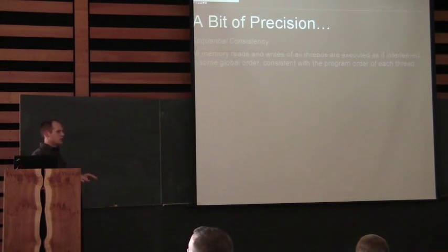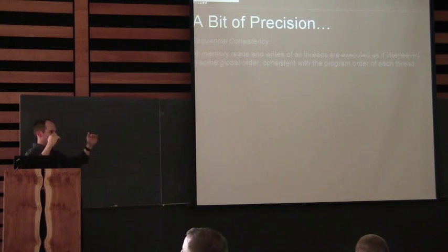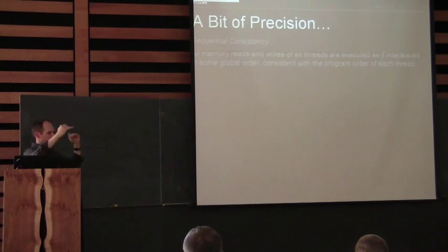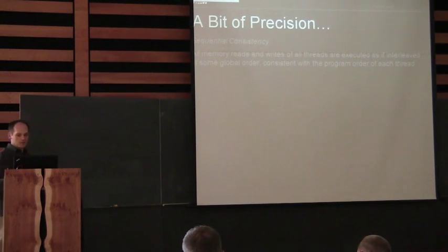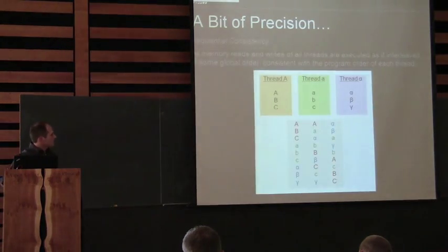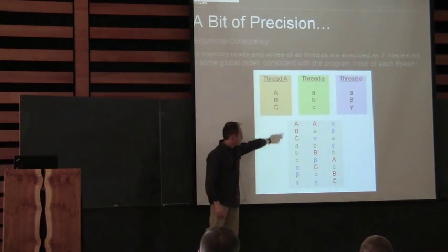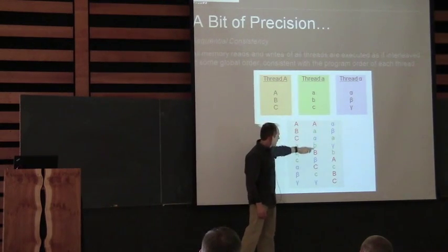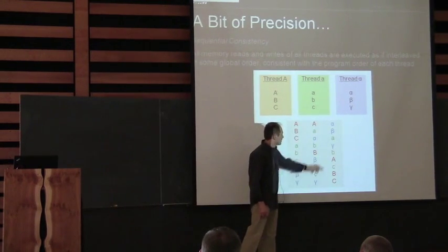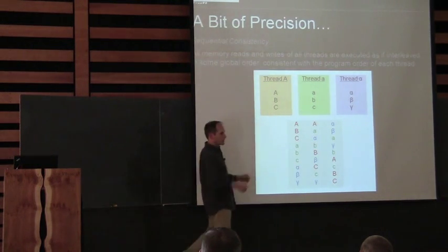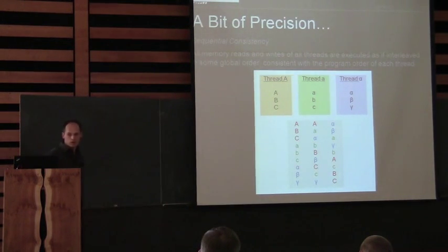That means when you look at your code, all you have to do is imagine every line of code, and after that line any line in the other thread could have happened. Just put all the possible combinations of all the instructions in your threads and then you have no problem. Basically this thread does ABC, that one does Alpha Beta Gamma, and you could mix them up in any of these orders, but ABC always happens in order. An individual thread will work as expected.